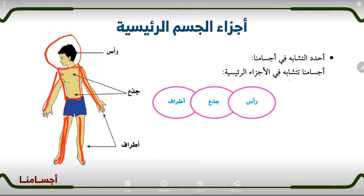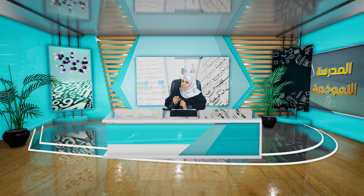أجسامنا تتشابه في الأجزاء الرئيسية وهي الرأس والجذع والأطراف. عزيزي الطالب، عزيزتي الطالبة، إذا أردت أن تتسهل لك مادة العلوم وتصبح مادة سهلة ويسيرة، فعليك بتعلم القراءة بشكل صحيح، وهو الذي سوف يسهل عليك دراسة هذه المادة الشيقة.